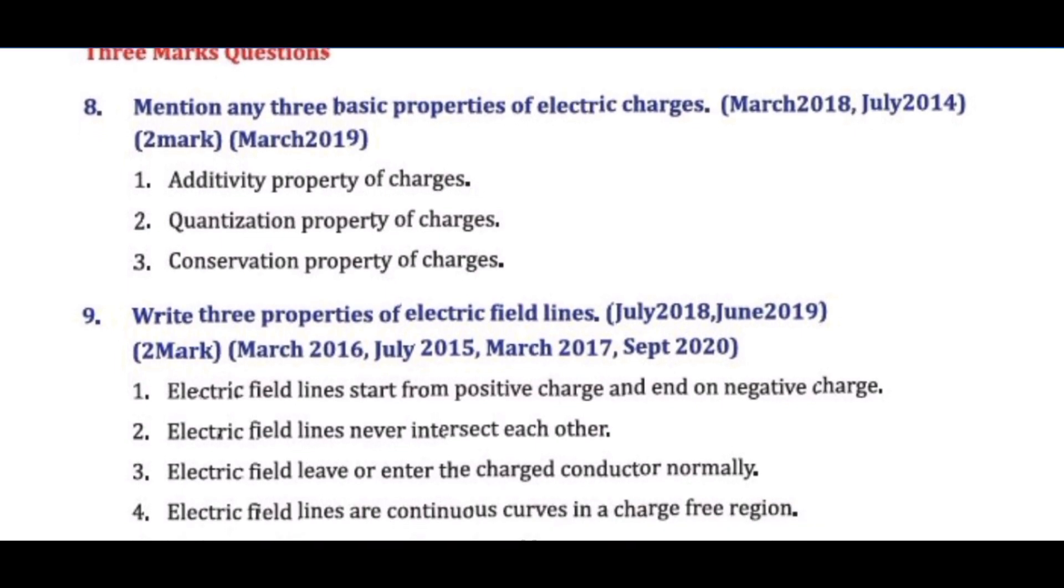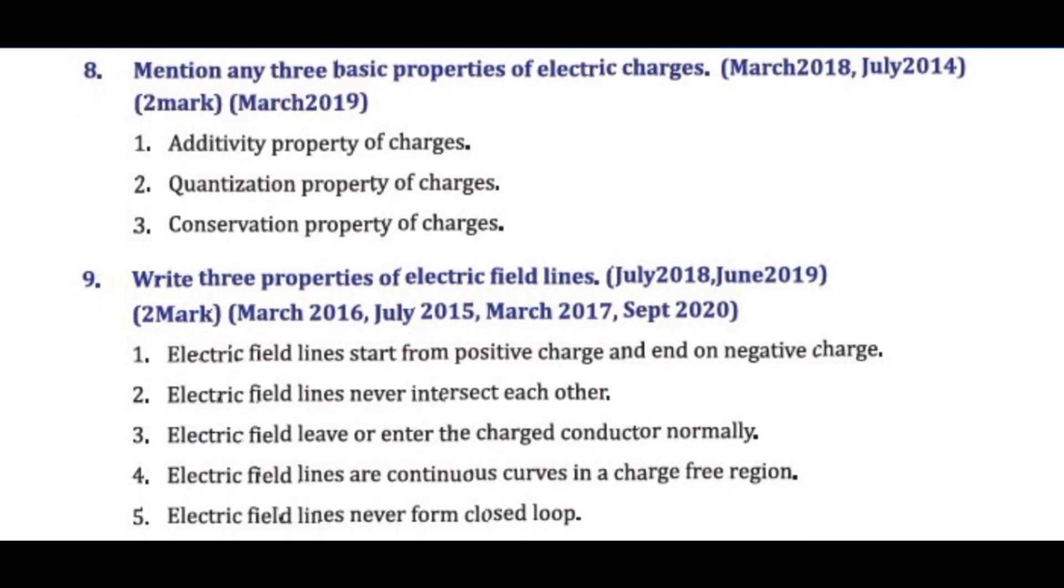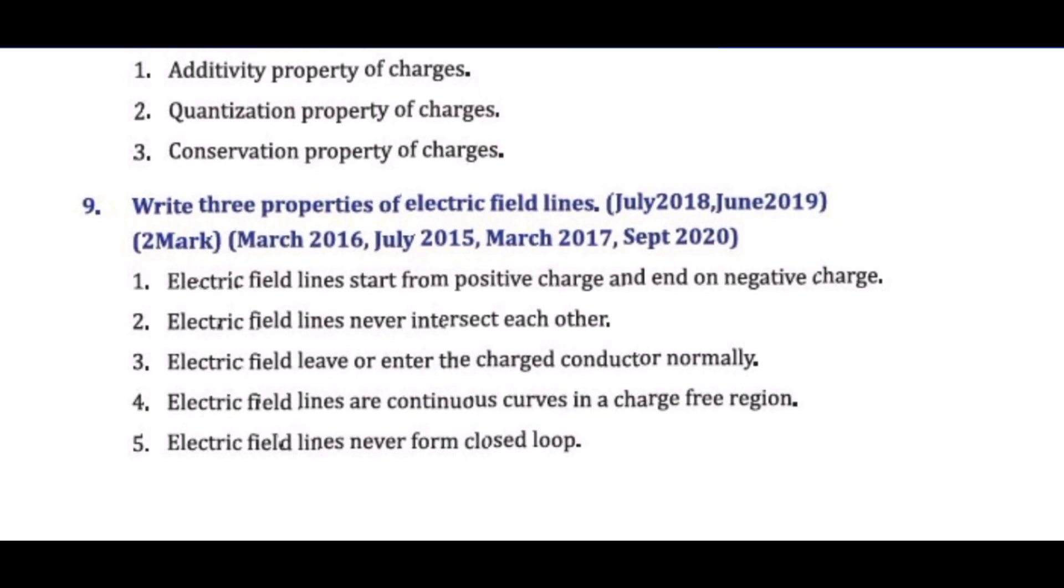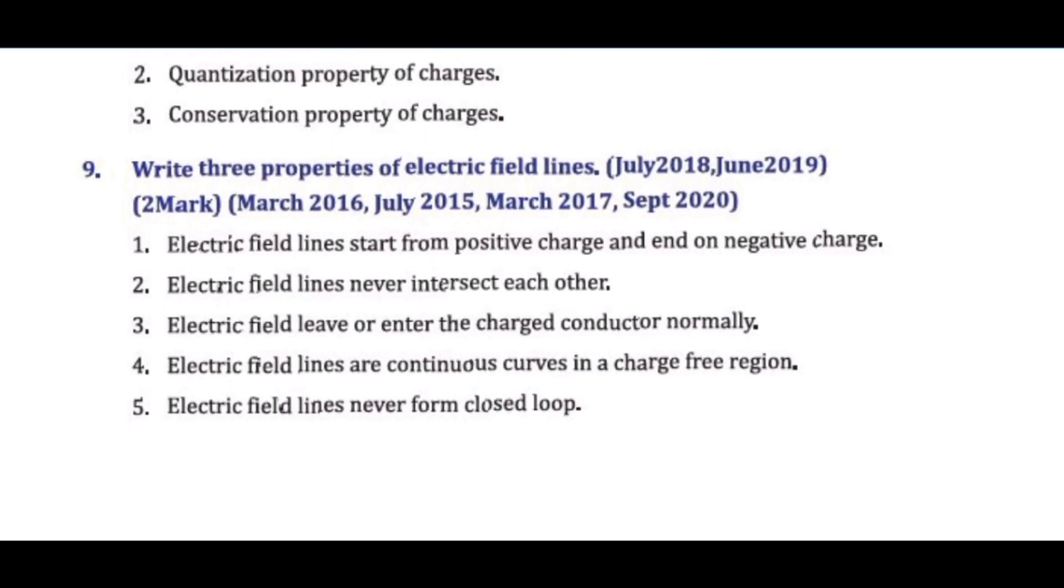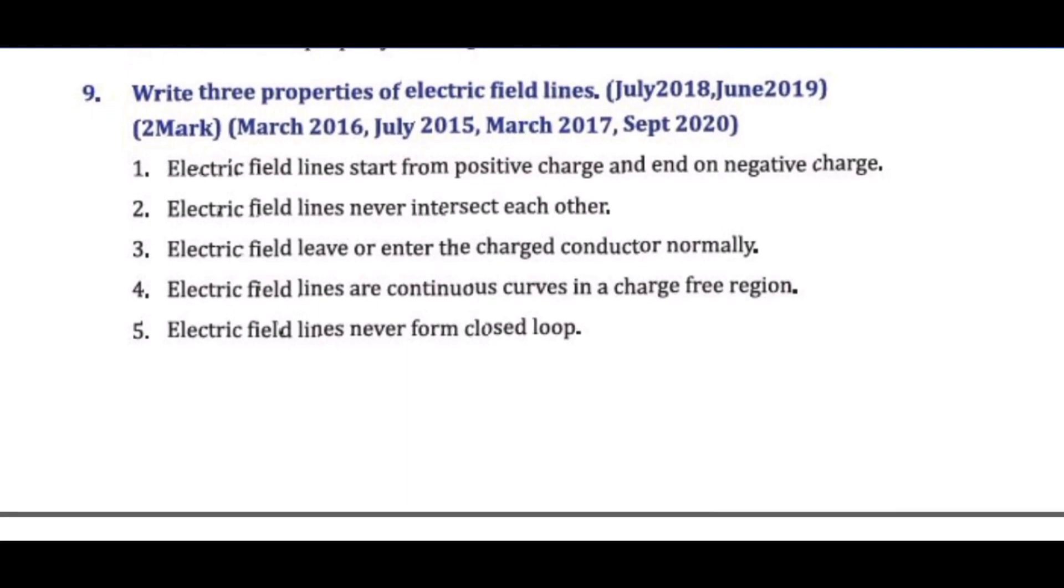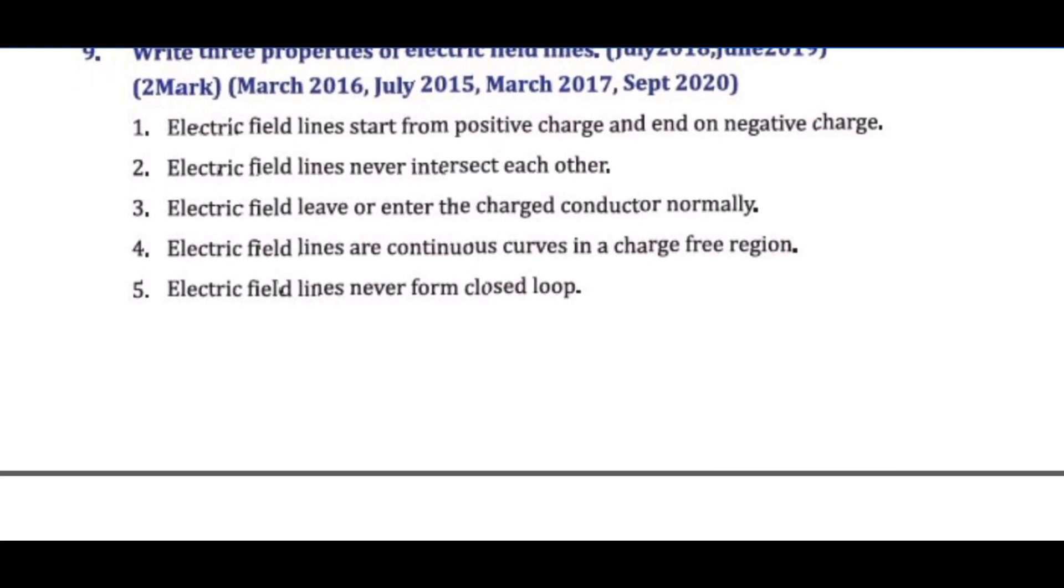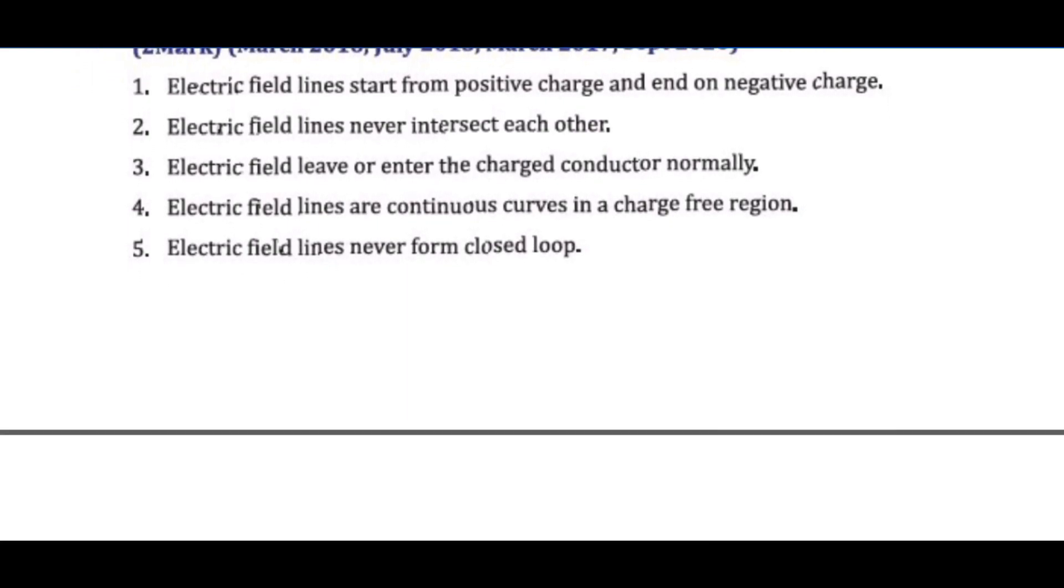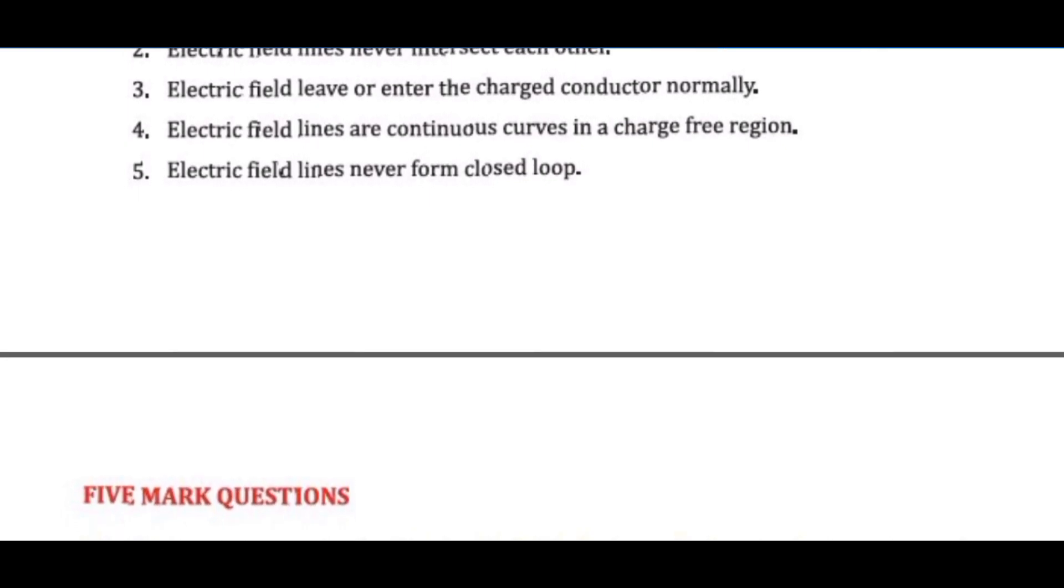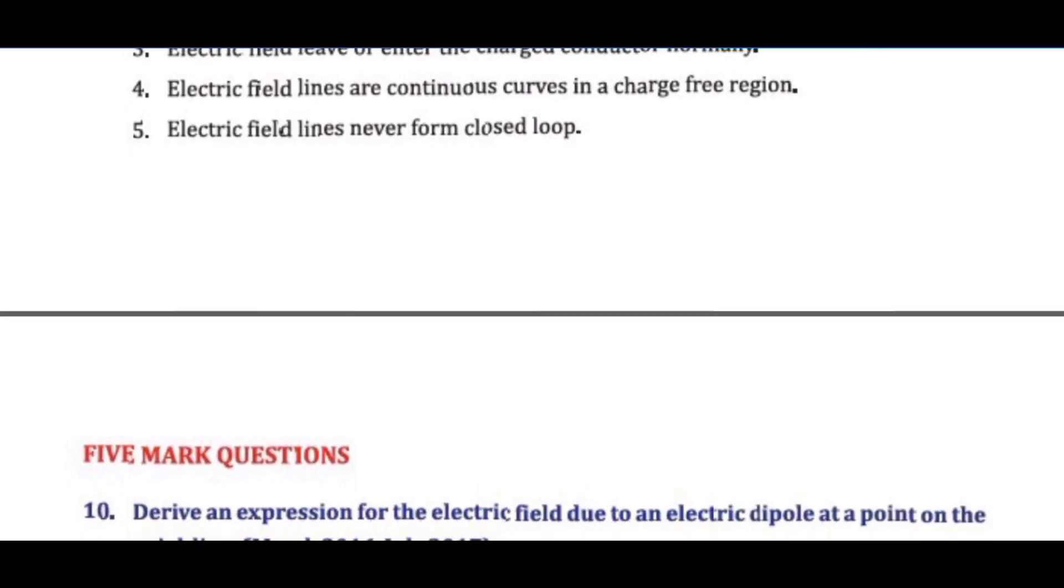Question 9: Write three properties of electric field lines. Answer: One, electric field lines start from positive charge and end on negative charge. Two, electric field lines never intersect each other. Three, electric field leave or enter the charged conductor normally. Four, electric field lines are continuous curves in a charge-free region. Five, electric field lines never form closed loop.